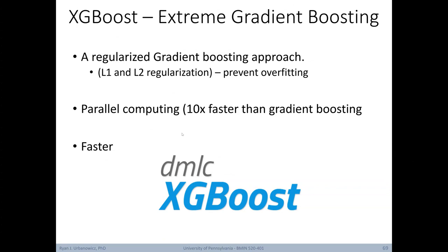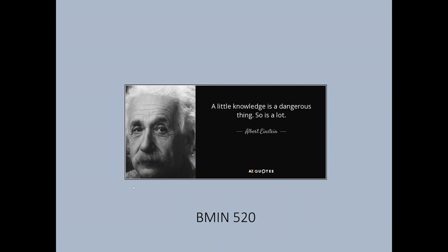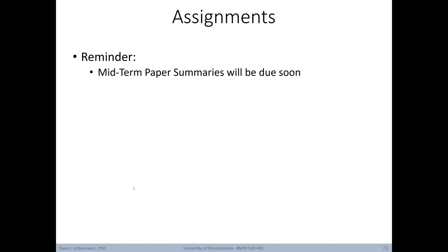Here's a summary of today's lecture. We began by learning about semantic webs — terminology and how this idea is focused on linking databases, ontologies, data, and research across the web — and some resources and strategies to move towards this goal, including RDF, OWL, and description logics. Next, we learned about tree representations — how we can build them with expert knowledge or through induction via machine learning, some tree-based terminology, structure, and their links to logic, and how they're built and how induction can be applied to generate them. Lastly, we took a tour of other tree-based machine learning methods, talking about ensembles, bagging, and boosting. Today's quote: 'A little knowledge is a dangerous thing — so is a lot.' A quick reminder that your midterm paper summaries will be due soon — please check the syllabus for the specific date. Thank you for listening, and I'll see you in the next lecture.